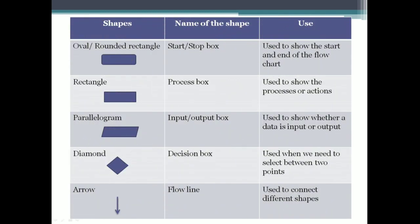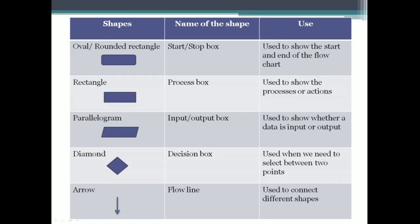There are basically 5 shapes we can use in a flowchart. The first shape is called oval or rounded rectangle, also known as the start or stop box, which is used to show the start and end of a flowchart. The second shape is rectangle, also known as the process box, which is used to show various processes or actions in an algorithm. The third shape is parallelogram, also known as the input or output box, which is used to show whether data is an input or output. In the example of adding 2 numbers, the inputs can be represented using the parallelogram.